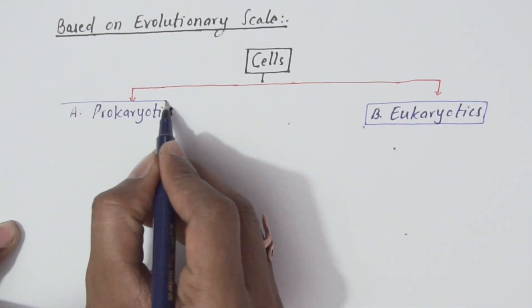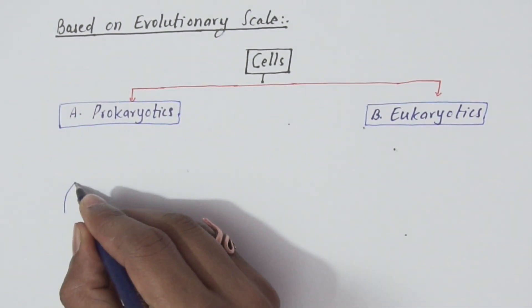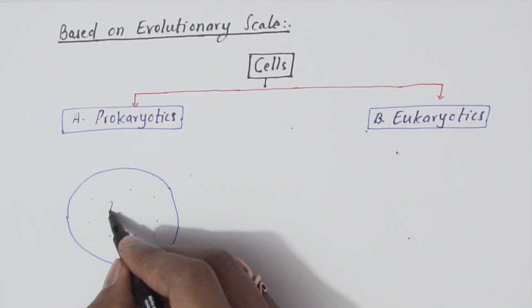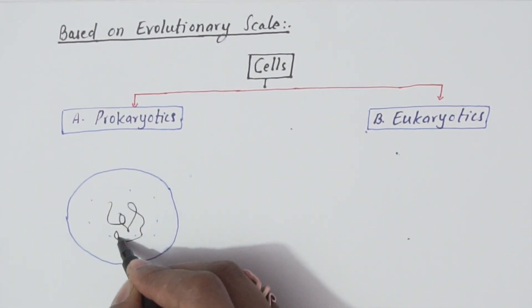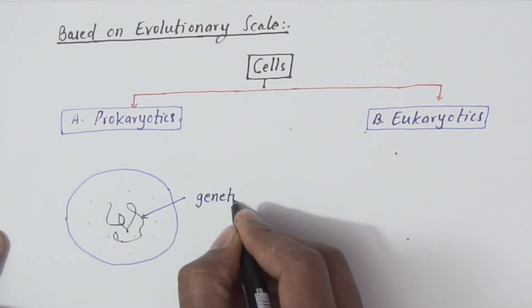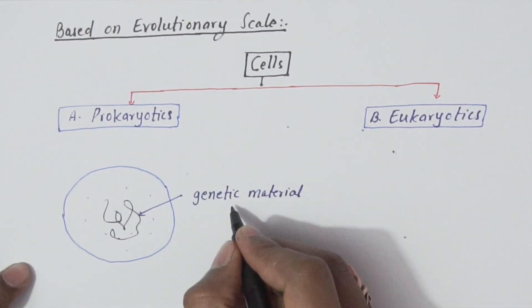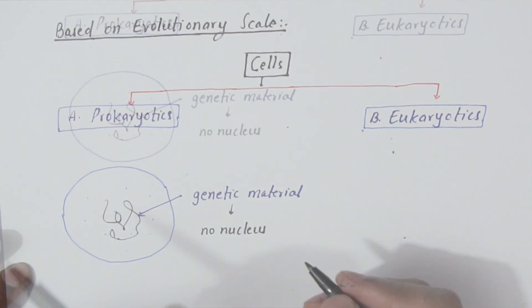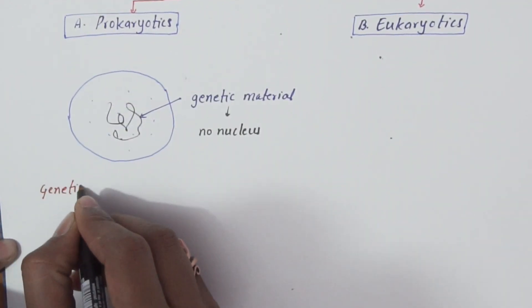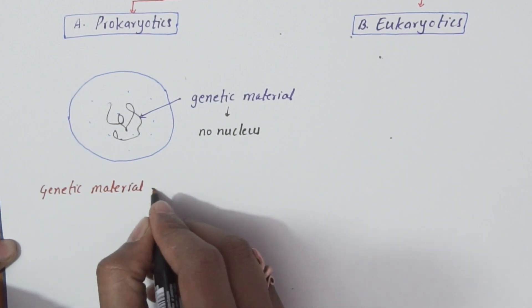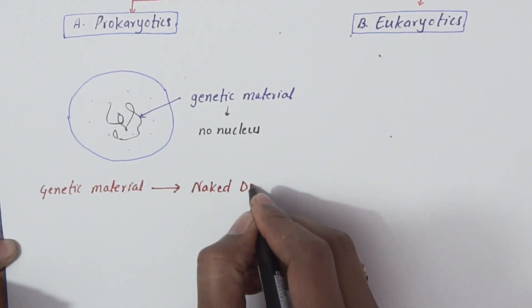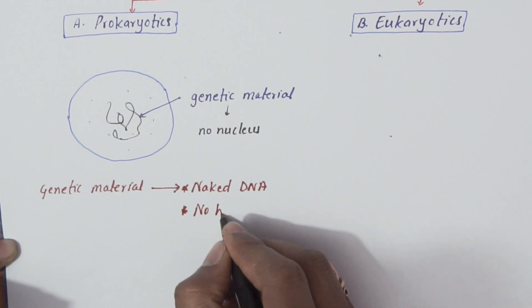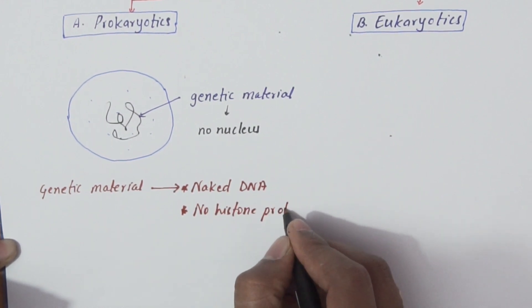You are seeing a diagrammatic representation of prokaryotic cells, which have genetic material but no nucleus. Here, genetic material is found in the form of naked DNA without histone protein, and it lies freely in the cytoplasm.